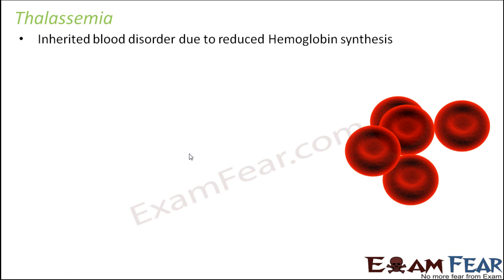By now we all know what exactly hemoglobin is and what it does. As far as the structure of hemoglobin is concerned, hemoglobin is a protein molecule — a tetramer with four polypeptide chains: two alpha chains and two beta chains. Attached to each of these chains is an iron-containing molecule called heme, which is primarily responsible for transporting oxygen to different parts of the body.